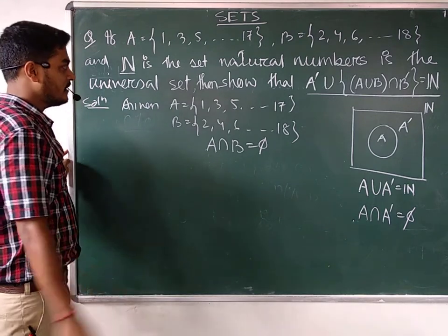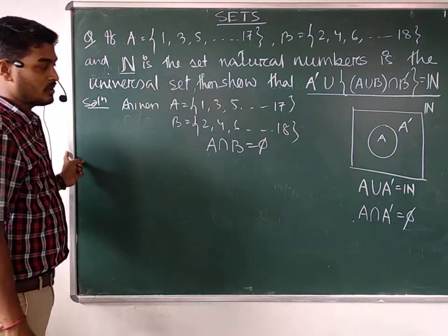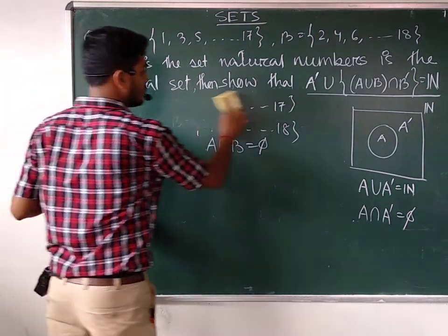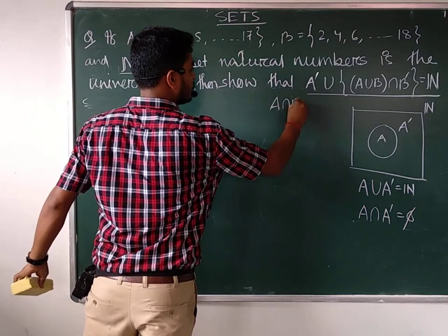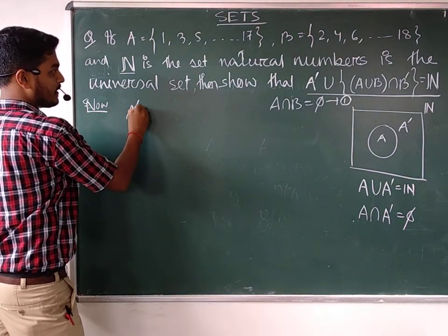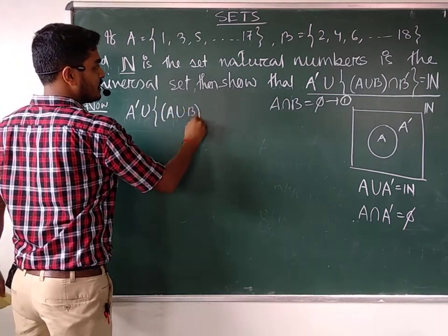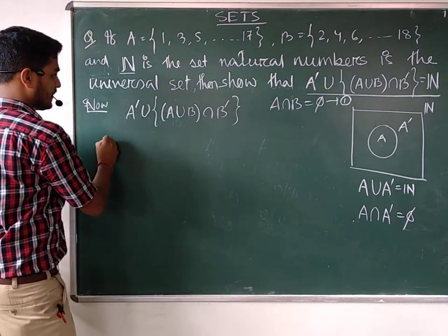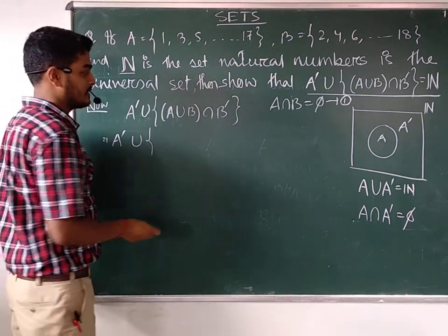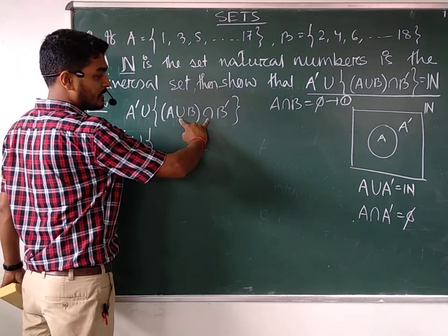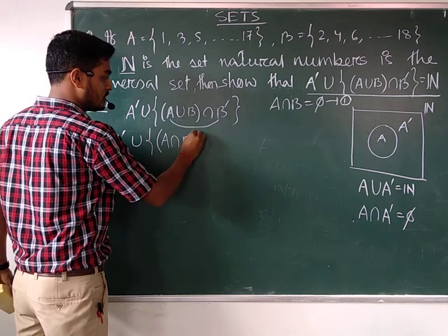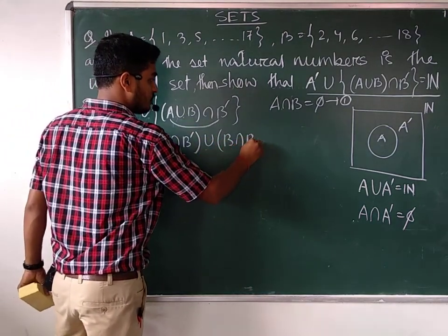So now we consider the expression and try to simplify it. This expression is equal to the universal set. We have got that A intersection B is equal to phi — equation number one. So on the left hand side we will consider: A complement union, A union B, intersection B complement. First of all we will try to simplify. We will apply the distributive property. So applying the distributive property, we will have A complement union A intersection B complement, then union B intersection B complement.